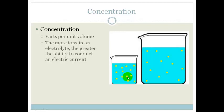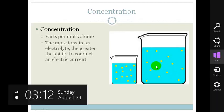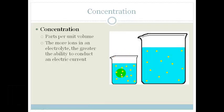If you look here, you can see that there are more ions per unit volume in the smaller container than in the larger container. So, therefore, the more ions in an electrolyte, the greater the ability to conduct an electric current. Therefore, the greater the concentration, the better the electrolyte.